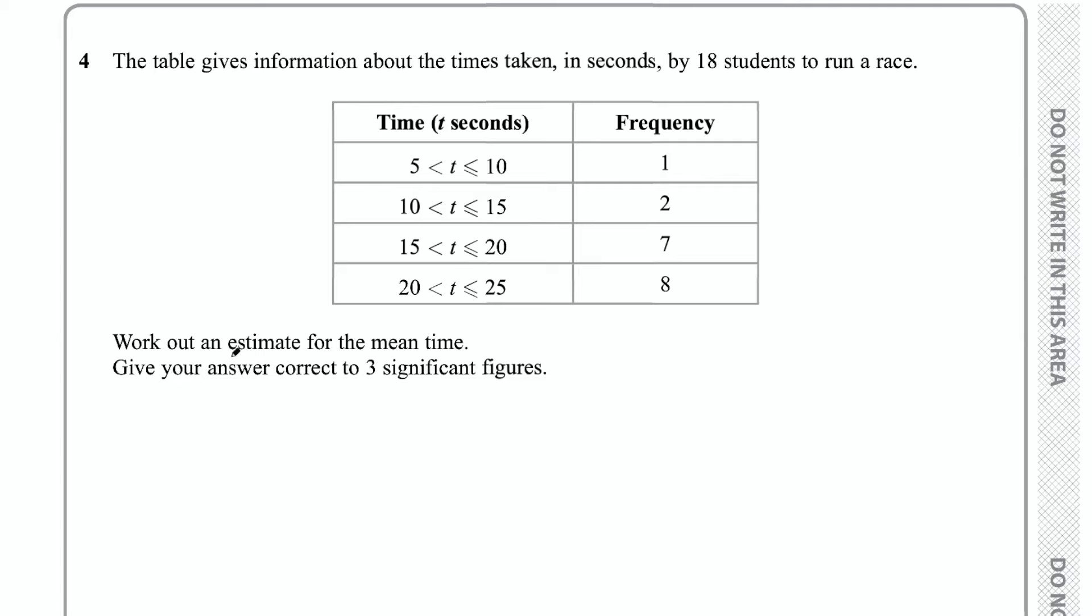Firstly, let's talk about this word estimate. Why is it an estimate and not an exact mean? That's because we are given intervals here. For example, we have one student running the race between five and ten seconds. We don't know exactly how long he took to run the race, we just know he took between five and ten seconds. So we can only work out an estimate for the mean because we don't have the exact times.